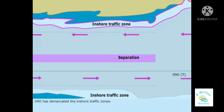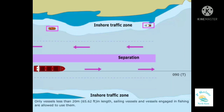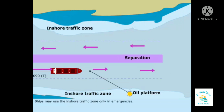IMO has demarcated the inshore traffic zones. These are not to be used by large vessels. Only vessels less than 20 meters or 65.62 feet in length, sailing vessels, and vessels engaged in fishing are allowed to use them. Ships may use the inshore traffic zone only in emergencies, or when approaching a port, offshore installation, or pilot station.